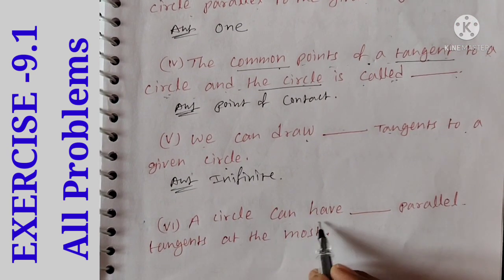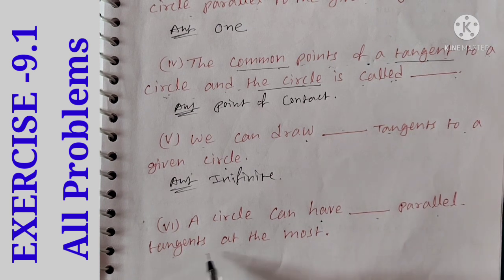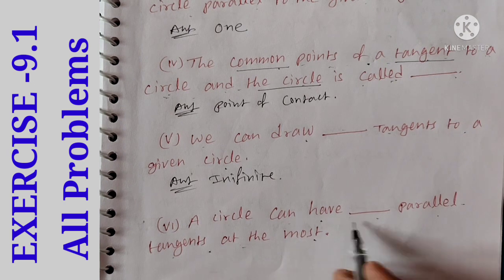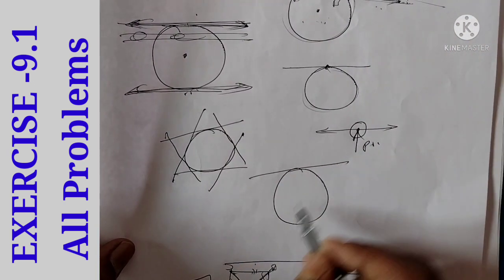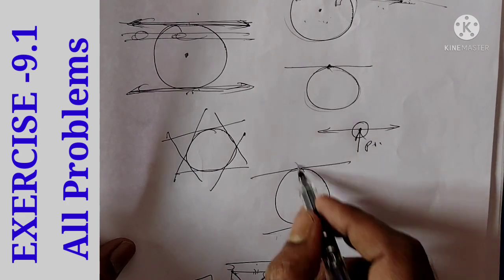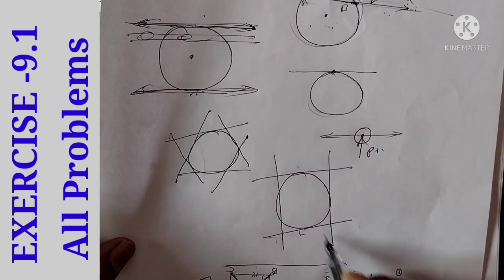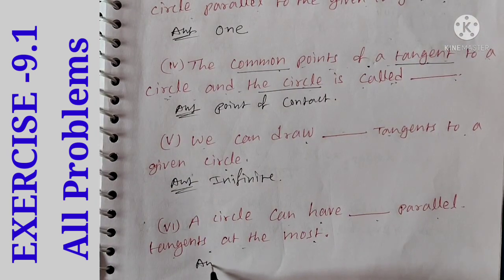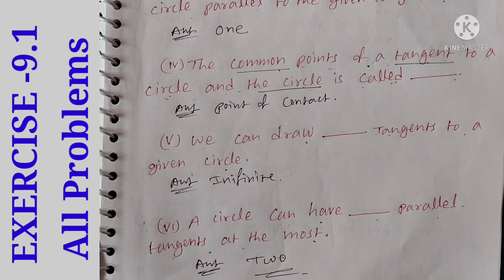Last question: a circle can have dash parallel tangents at the most. One circle can have any parallel tangents. Parallel means two tangents. We can draw two parallel tangents. So the answer is two.